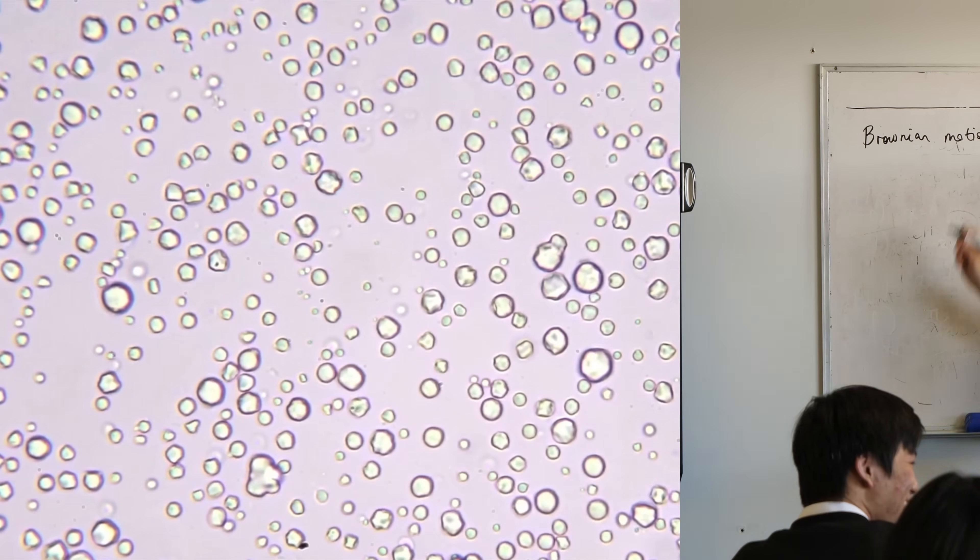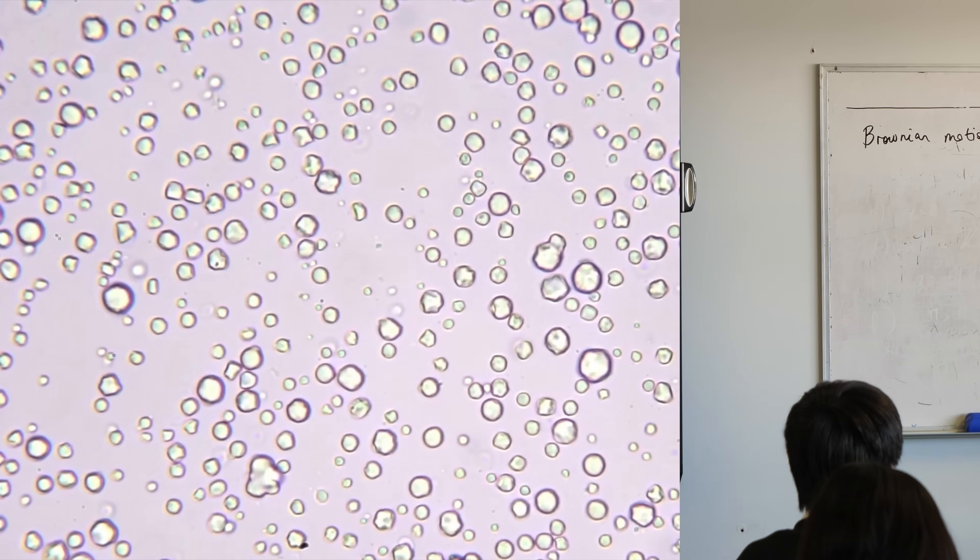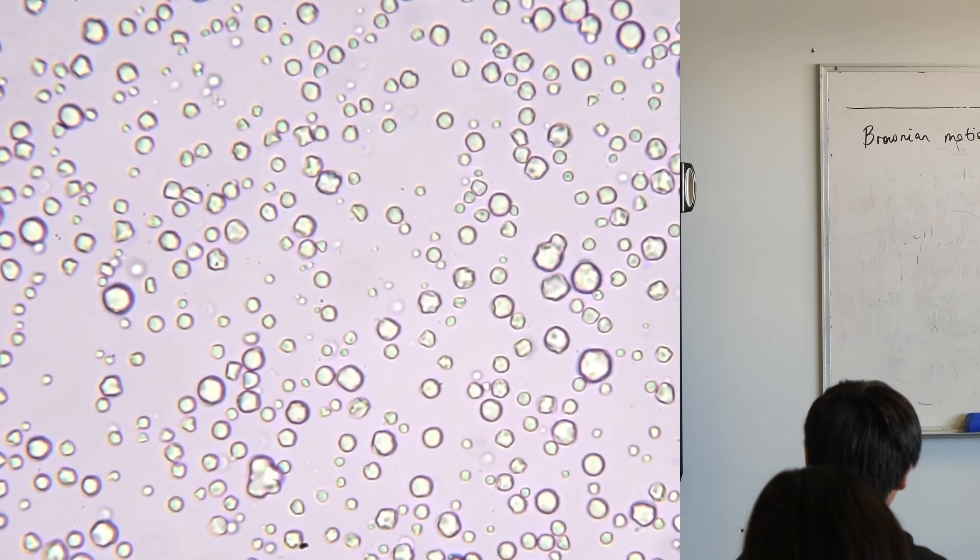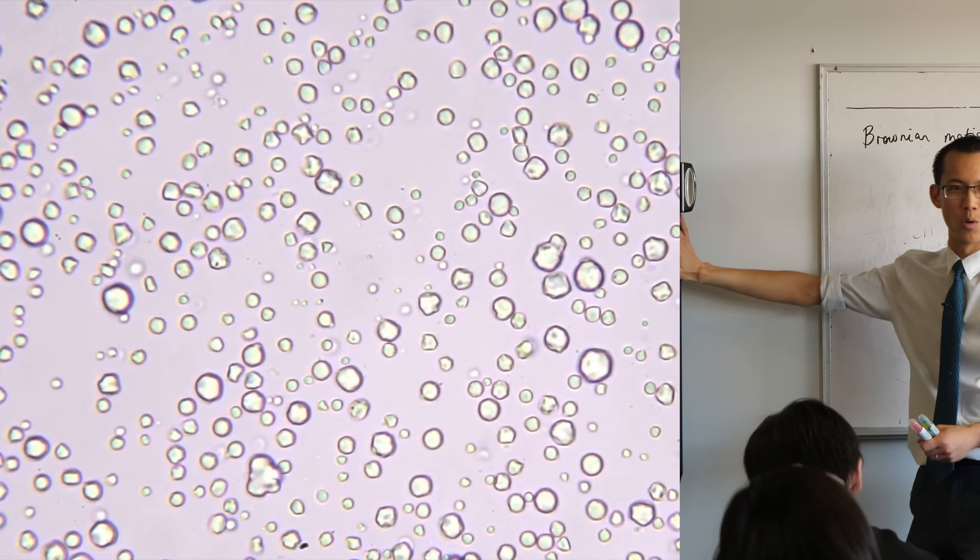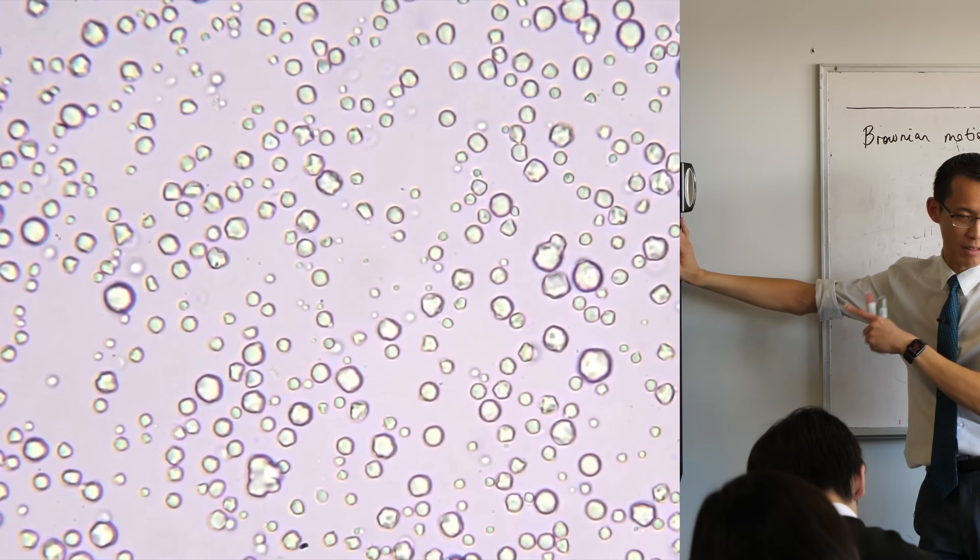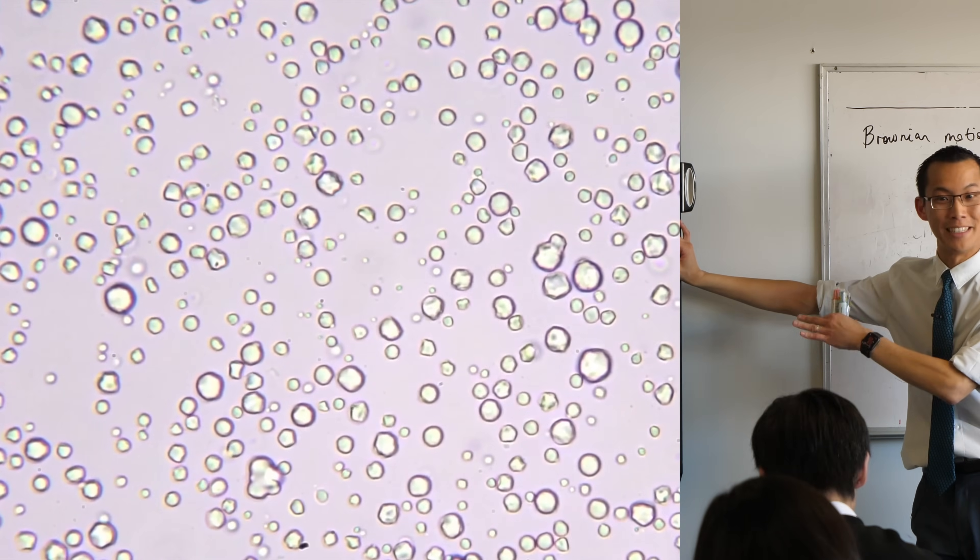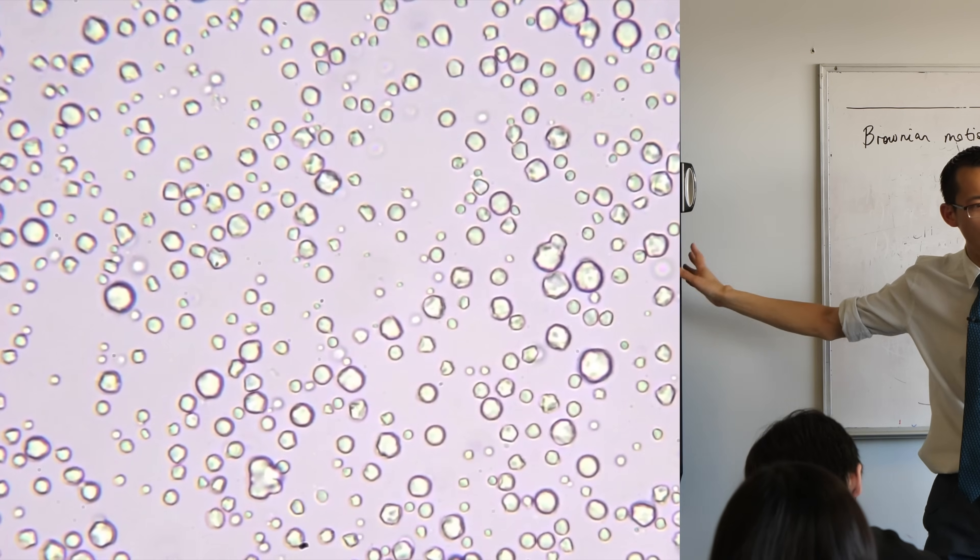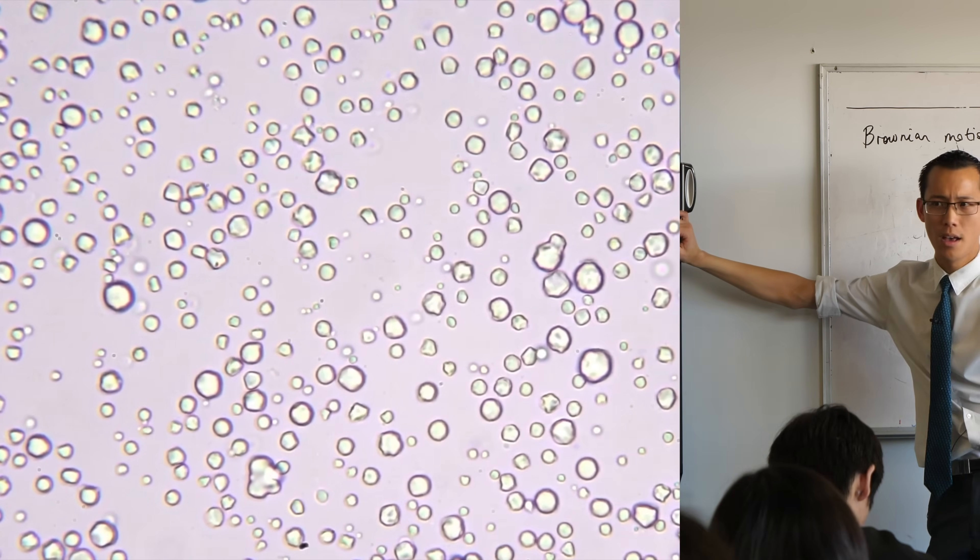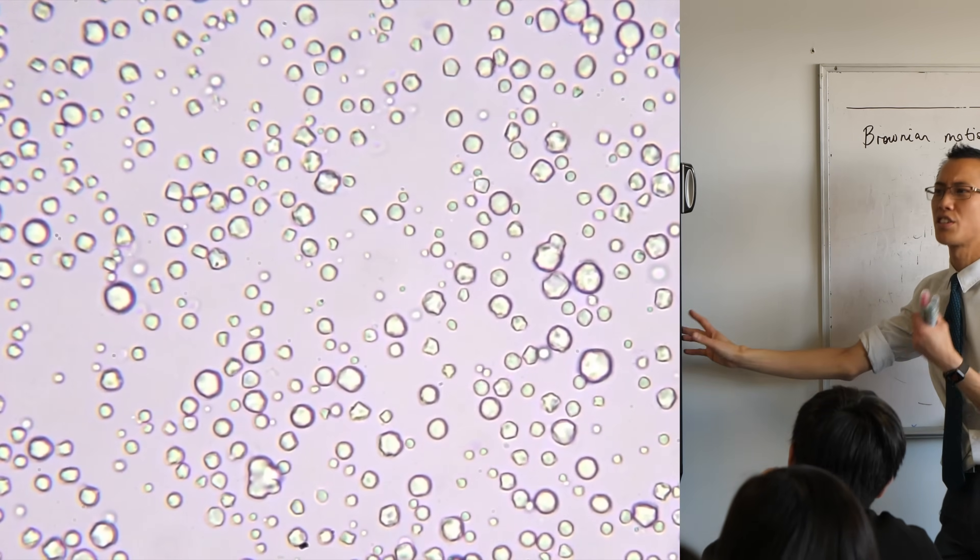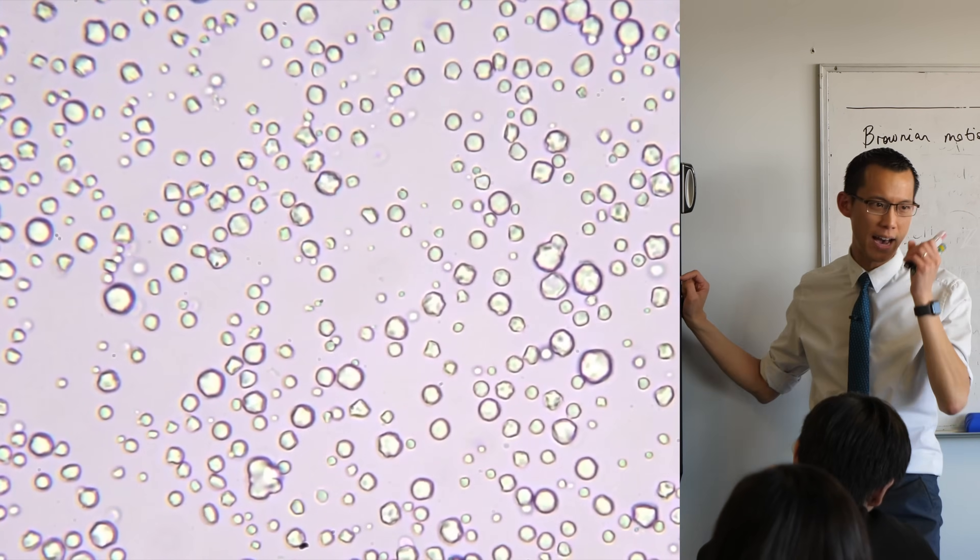You didn't expect to come here getting a physics lesson, but you're getting one because what Brown the botanist saw when he looked at this was, he was looking at pollen, like I said, not fat, but this is just a really easy way to see what's going on. He said, why are these things that I'm looking at under the microscope, why are they moving? Like everything is completely still, as still as I can possibly make it. Why are they moving about?